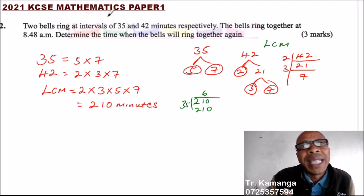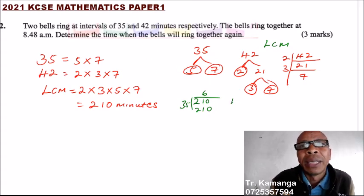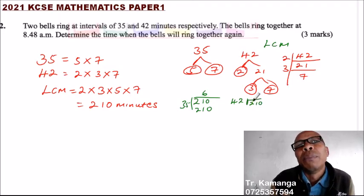6 times this bell, I am just explaining, it is not part of the answer. If you divide by 42, you should be able to get that by 42. You divide by 210. Then you should be able to say 5 multiplied by that. That is 10, 21.